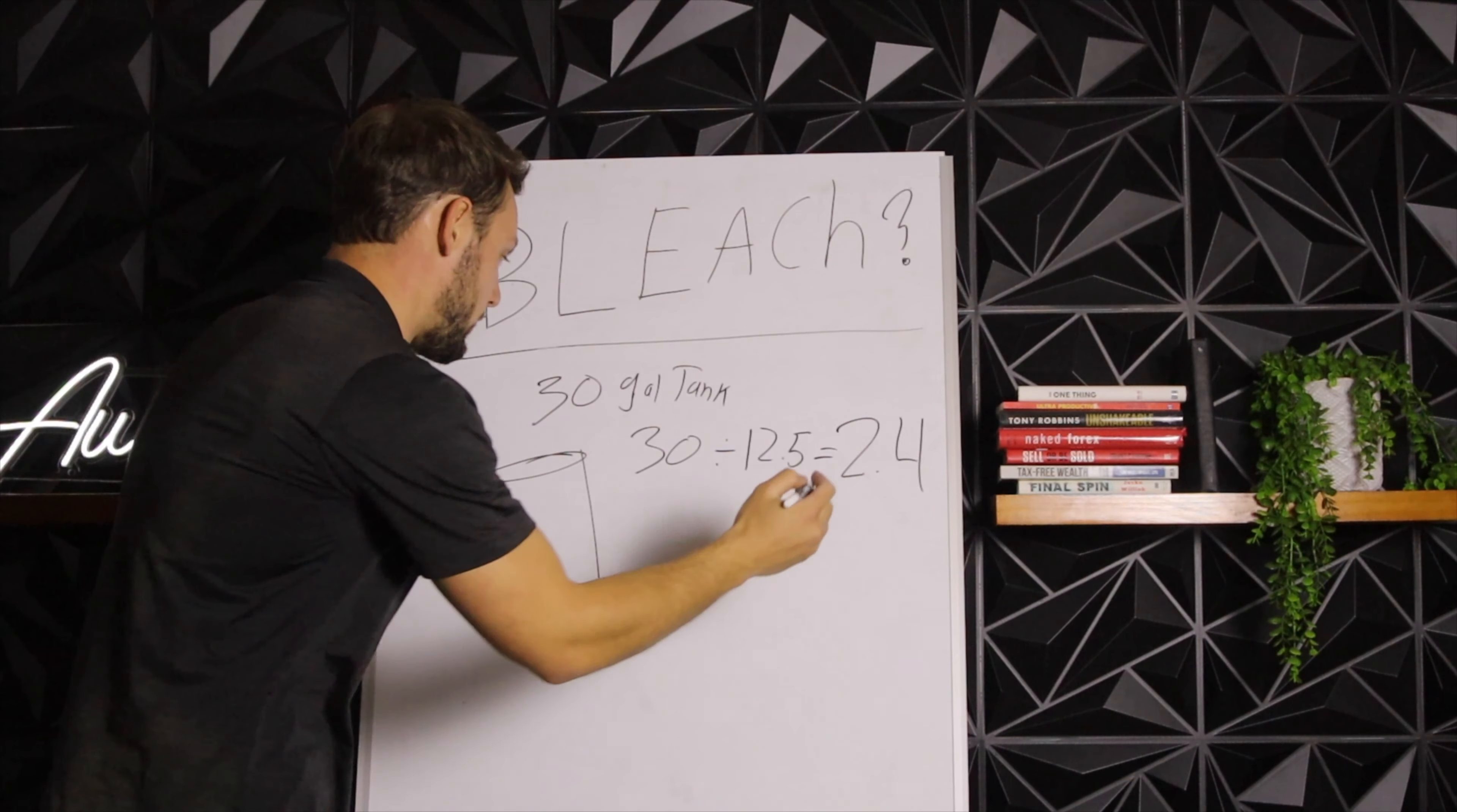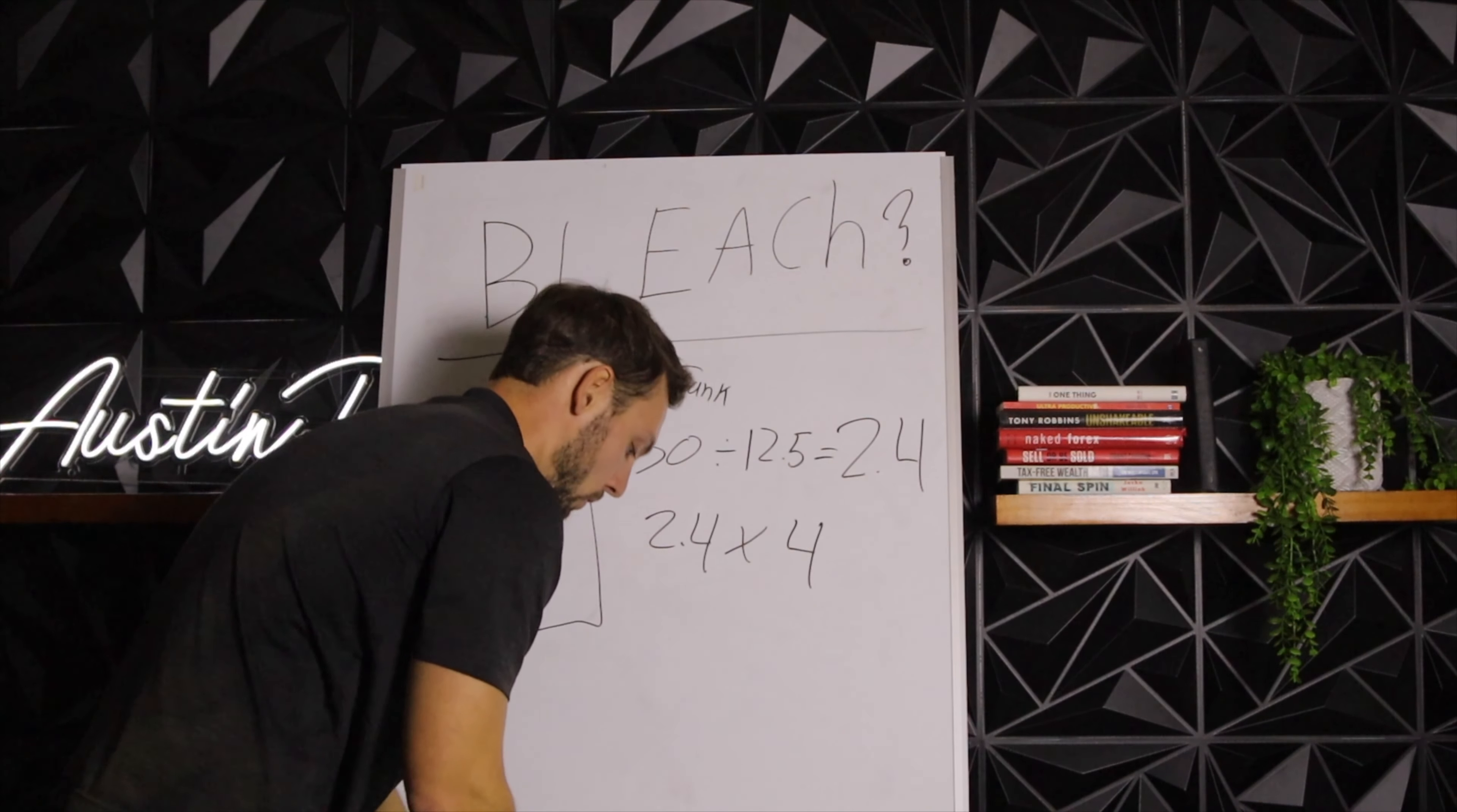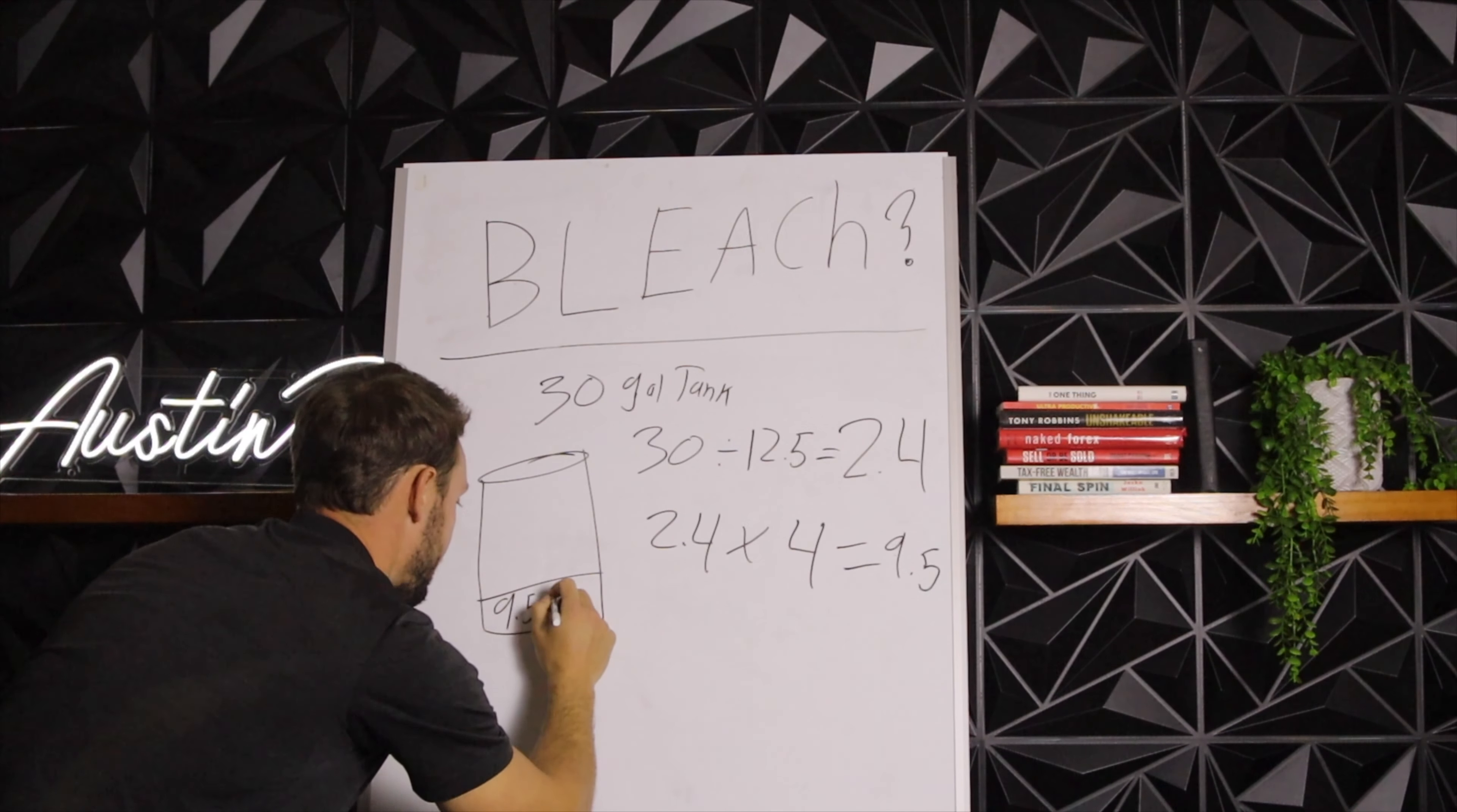2.4. We're going to take 2.4 and we're going to multiply that times the strength of bleach which we're trying to achieve. In this case we're looking for a 4% solution, so we're going to multiply that by 4. 2.4 times 4 gives us 9.6, we'll just say 9.5. So in this tank needs to be 9.5 gallons of bleach and then the rest H2O.